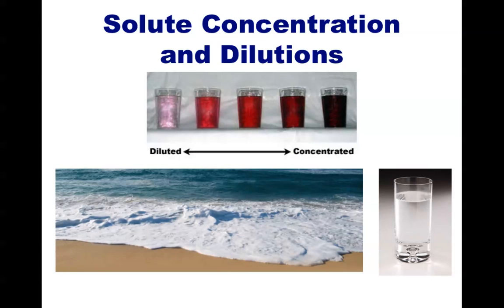On the top are five different solutions, ranging from very diluted on the left to very concentrated on the right. They are placed in order of increasing concentration of the colored solute. In other words, these all have the same volume — all five glasses have the same volume — but they each have a different amount, and thus different concentrations, of the solute.